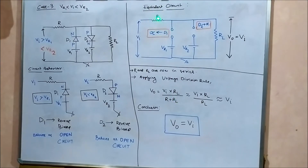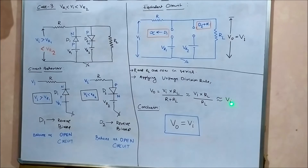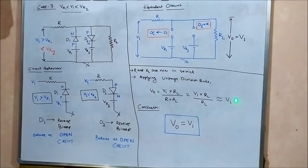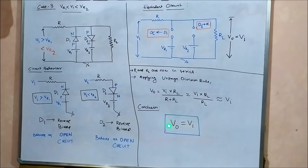The output follows the input signal waveform — we get the same signal as output that we applied at the input. The conclusion for case three: when the input voltage lies in between the two reference voltages Vr1 and Vr2, the output equals the input.